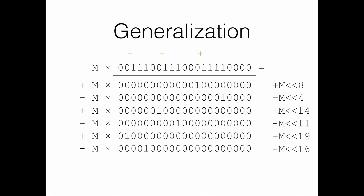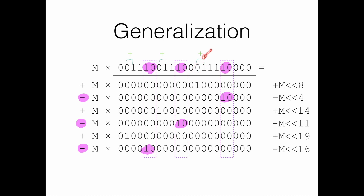So I write a plus right above any place where we have a zero followed by a one. Then I do the same thing for when I have a one followed by a zero — those correspond to rows that have a minus in them. So what I've learned is: look for places where you have '0 then 1' (associate a plus) or '1 then 0' (associate a subtraction). This allows us to skip the complicated math and simply look at the multiplier and decide the operations based on that.